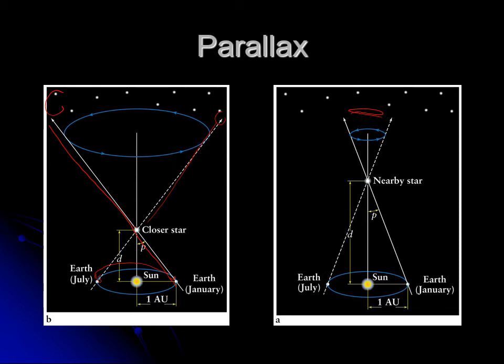Different books label parallax differently — some use P and some use the Greek letter pi. The farther away something is, the smaller the parallax; the smaller the parallax, the farther away it is. If you look at a star from Earth and then look again six months later when Earth is on the other side of its orbit, it looks like it shifts. Half of that total shift is the parallax angle. If you know the distance between the Earth and the Sun, you can use geometry to find the distance to the star.